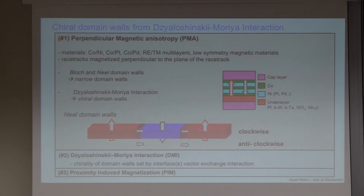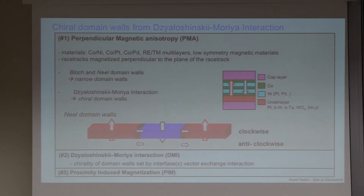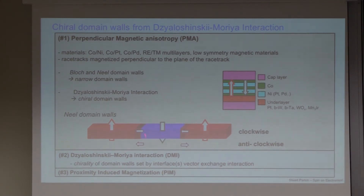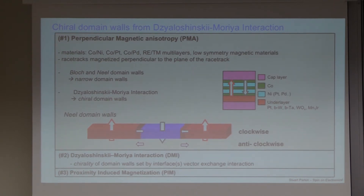Here we infer this from the domain wall motion itself — it's necessary in order to explain all domain walls moving in the same direction that we have these Néel walls. They can be clockwise or anti-clockwise: if we change the underlayer from platinum to tungsten, we can change the nature so that clockwise walls become anti-clockwise. There is also a very strong proximity-induced magnetization, meaning this magnetic cobalt layer through exchange will cause the platinum to become magnetic. In the structures I'm talking about, one third of the moment we move with current is from the magnetization induced in platinum — it's an enormous effect.